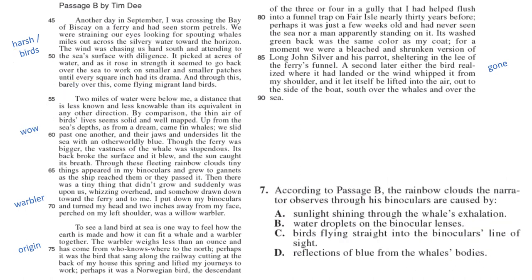Number seven: according to passage B, the rainbow clouds are caused by what? This doesn't give you a line number, but we see it around line 64 — 'these fleeting rainbow clouds.' It says its back broke the surface, it blew, and the sun caught its breath — sunlight shining through the whale's exhalation. The answer is A.